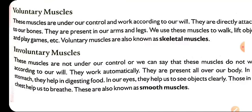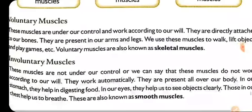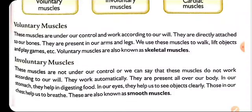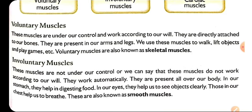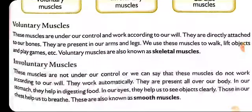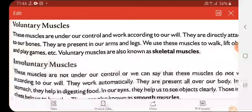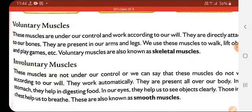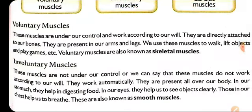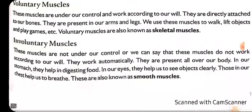Voluntary muscles are under our control and work according to our will. They are directly attached to our bones and they are present in our arms, legs, etc. Wherever muscles are directly attached to bones, those are the voluntary muscles. We use these muscles to work and lift things in daily life. Their other name is also skeletal muscles.